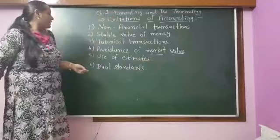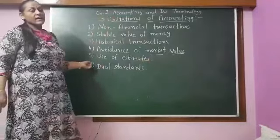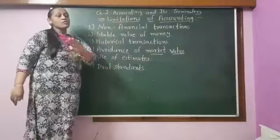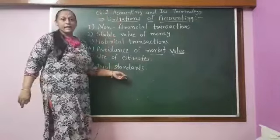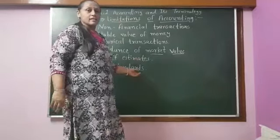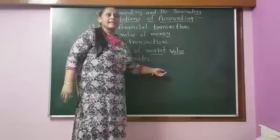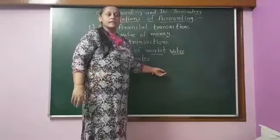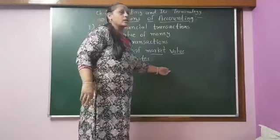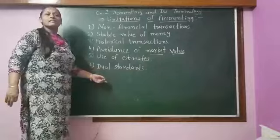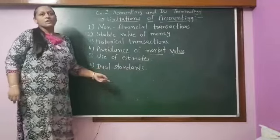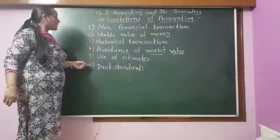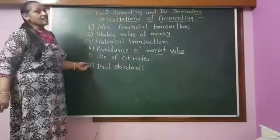Number six is dual standard. When we are writing books of account and preparing our final accounts, we prepare three accounts: trading account, profit and loss account, and balance sheet. The trading account and profit and loss account are written at actual cost — whatever expenditure or income we have incurred. But when we are preparing the balance sheet, we prepare it at historical cost. So these are two dual standards for writing accounting, and that is the next limitation of accounting.